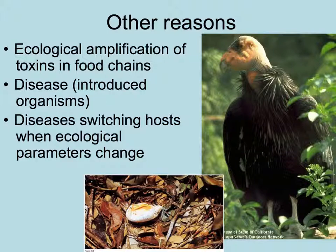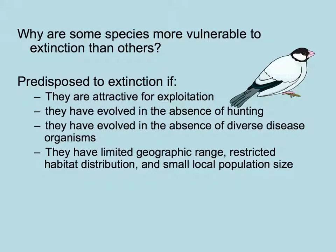Disease-introduced organisms can lead to the elimination of native species, and sometimes diseases can switch their hosts when the ecological situation changes — we've seen this even with diseases moving from wildlife to humans. Some ecologists have asked why certain species are more vulnerable to extinction than others. In some cases they're very attractive or delicious. They may have evolved in the absence of predation or hunting, so they're not wary at all, or they may have a limited geographic range and small local population sizes, all making them more vulnerable.